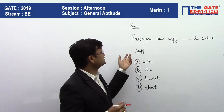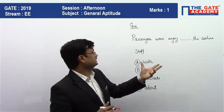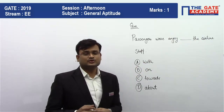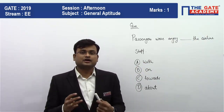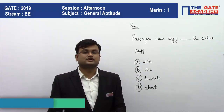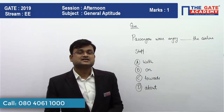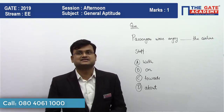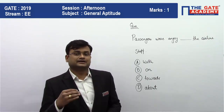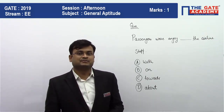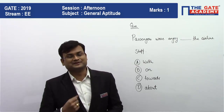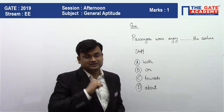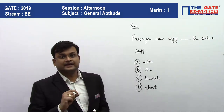The question is: 'Passengers were angry dash the airline staff.' I got many queries from students asking what the answer will be. We know that C and D are not the answer. In A and B, which is 'with' and 'on' — what will be the answer? It was a very good doubt.